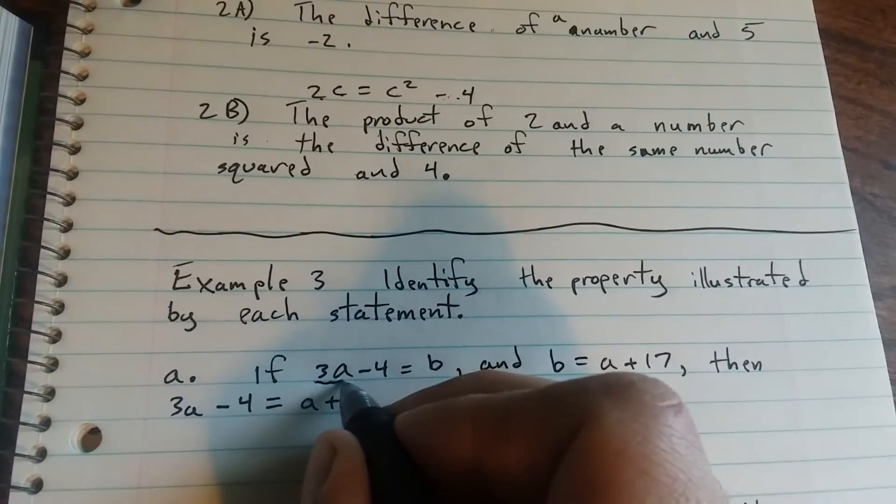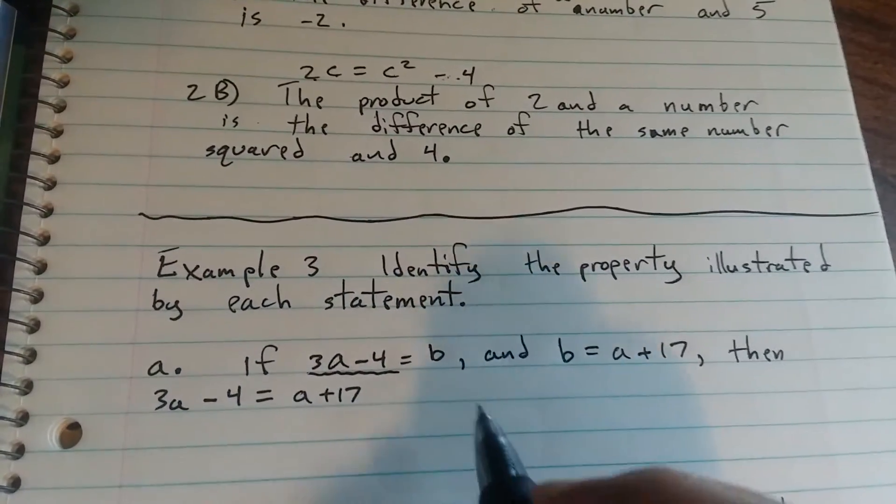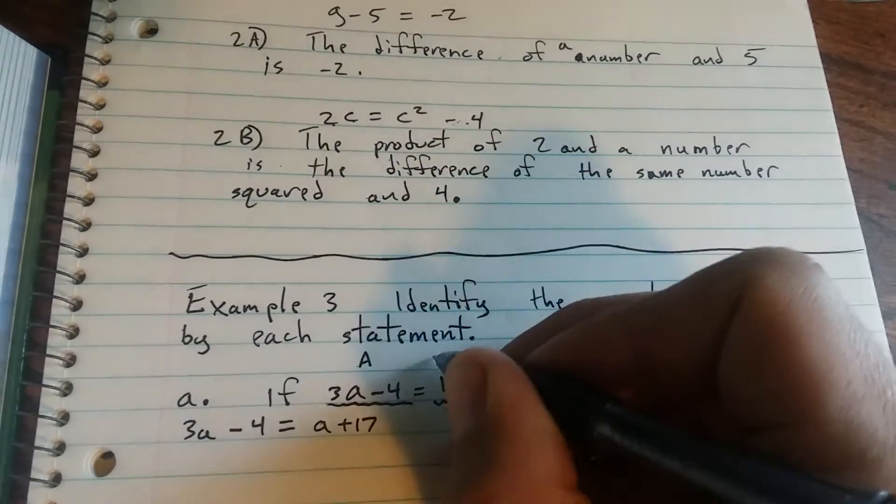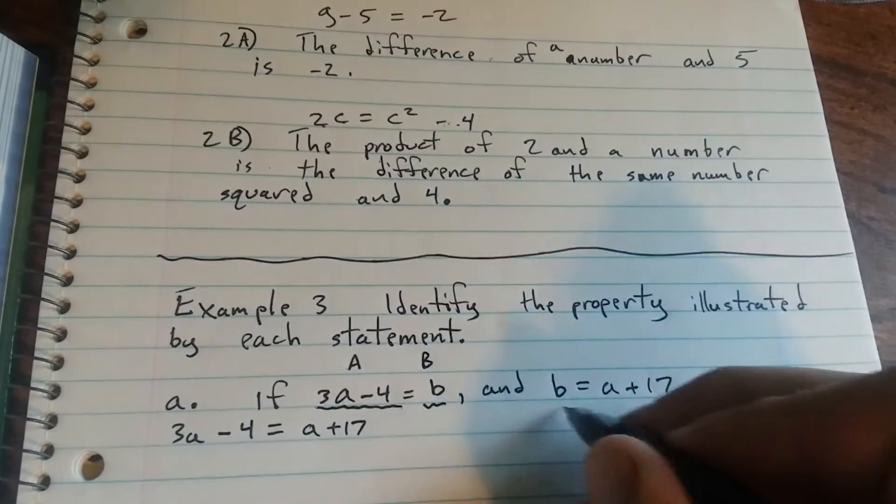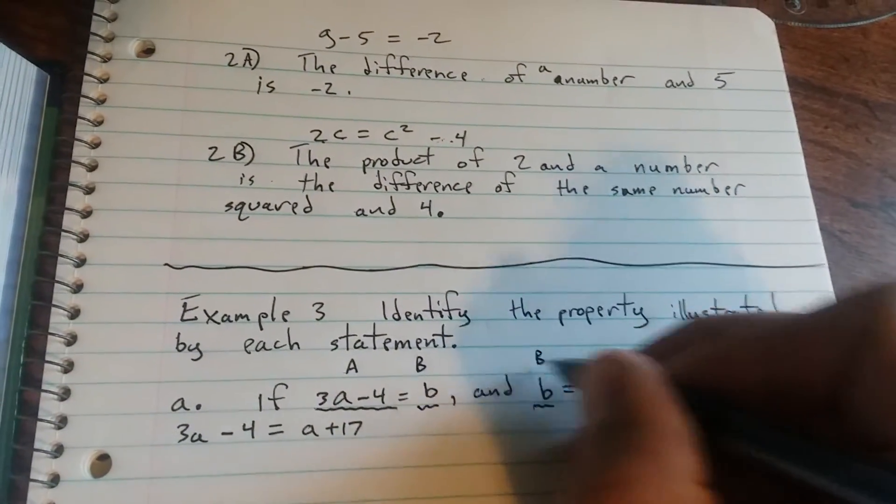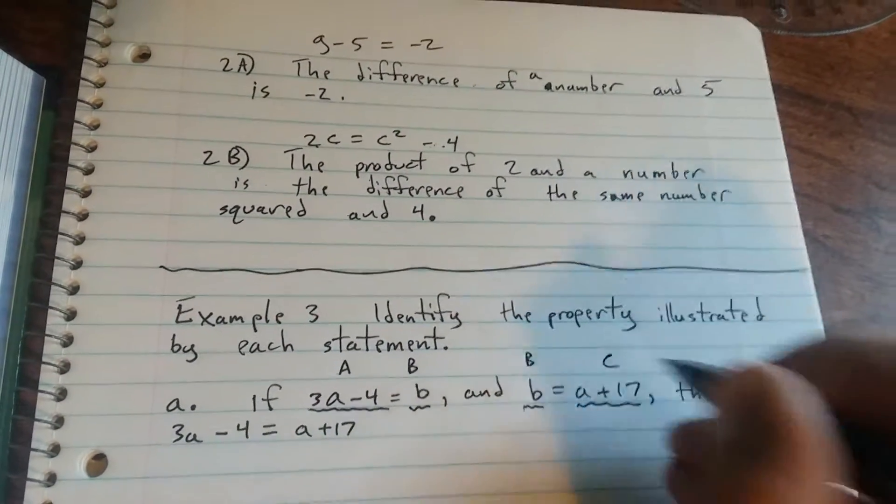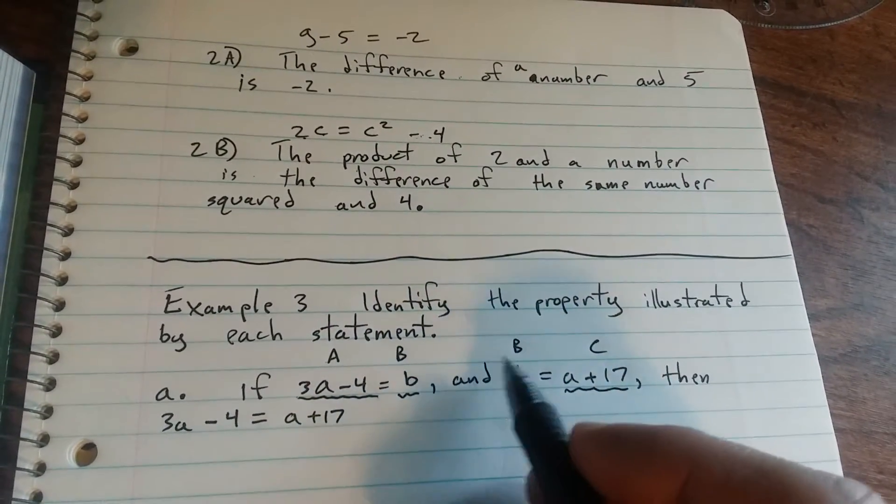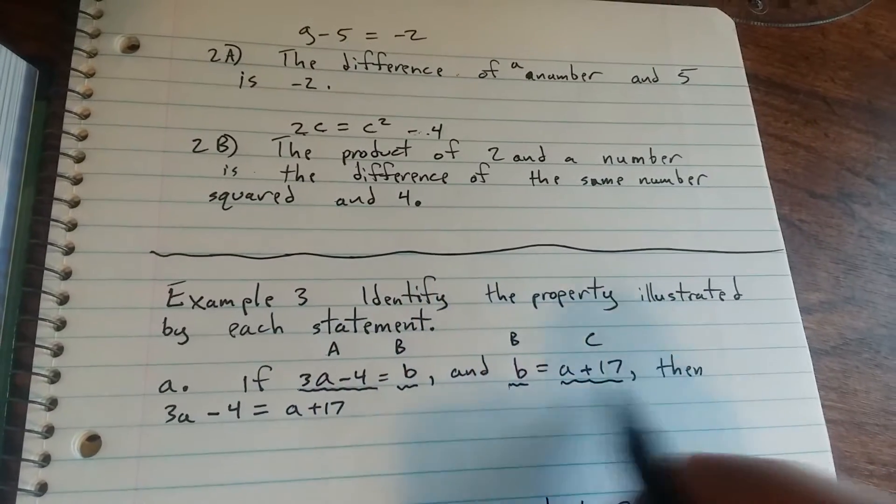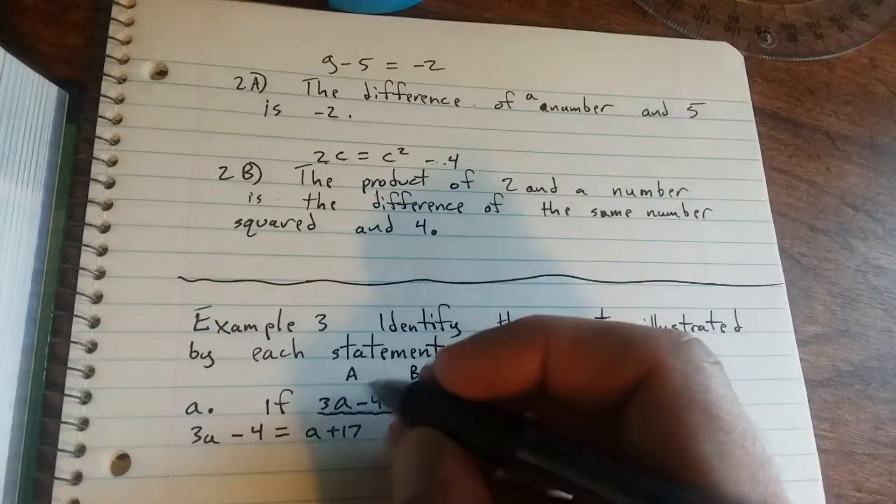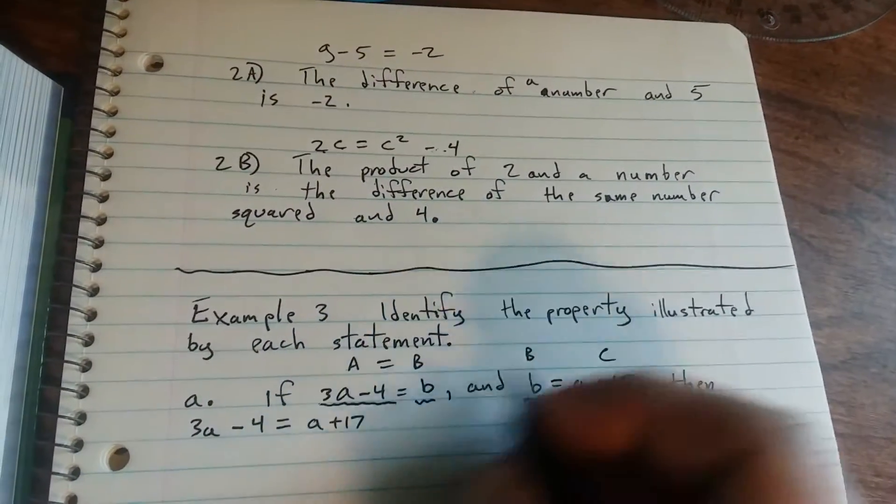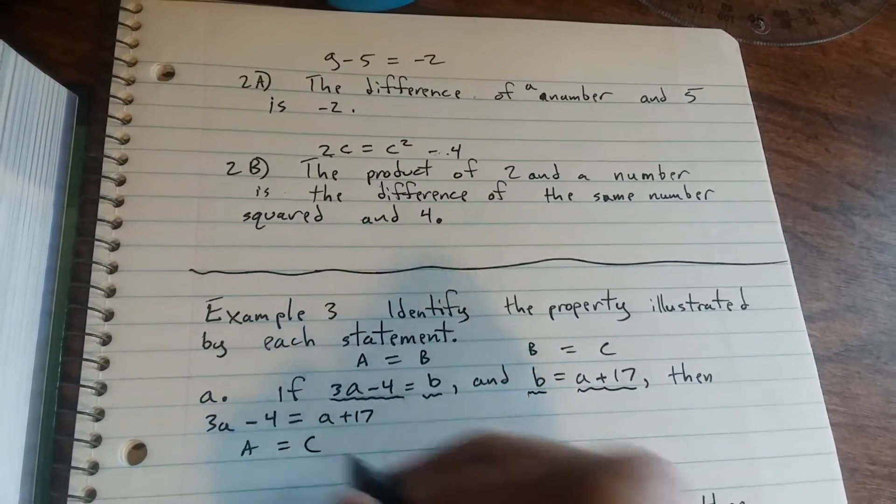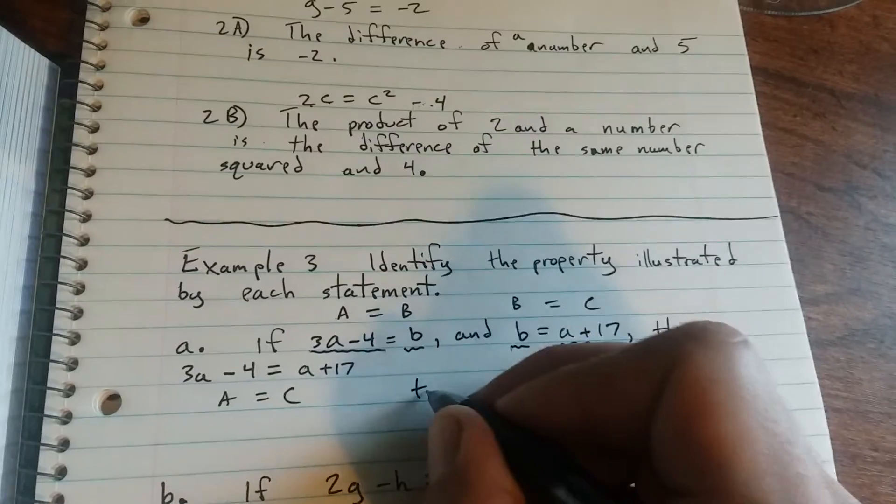So really, you could think of all of this as being capital A. Think of this as being B. You end up with B again, and think of this as capital C. So what this is saying is if A equals B, and B equals C, then A equals C. That is the transitive property.